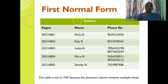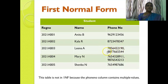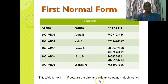Here is an example: a student table which has register number, name, and phone number. The phone number column contains multiple values, so it is not under first normal form. This table is not in first normal form because the phone number column contains multiple values and we have to eliminate this.